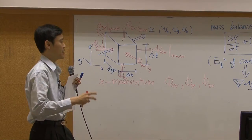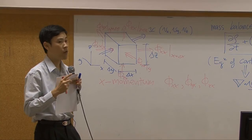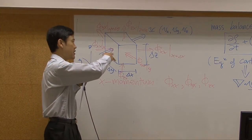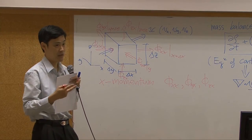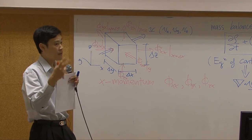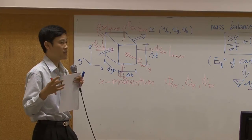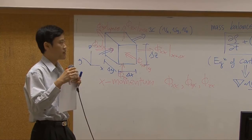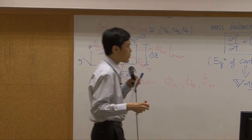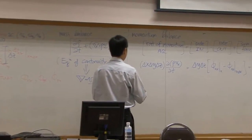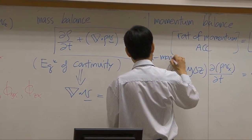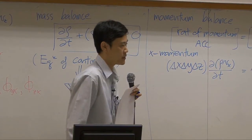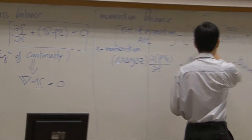So this picture is written just for x momentum only. In reality, we have x, y, and z momentum. So you have to repeat this picture for y momentum and z momentum again. So if you do everything at the same time, the equation will be totally messy. So I'm going to split the balance to each momentum. Let's start with x momentum balance.